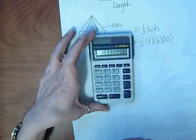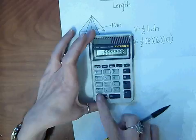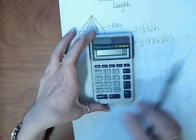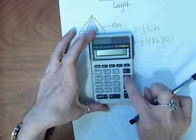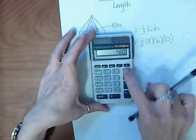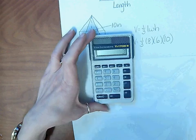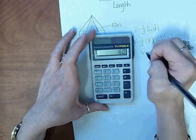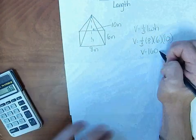The best way to deal with this one-third is to multiply the 8, 6, and 10, hit equals, and then divide the whole answer by three. And our volume is 160 inches cubed.